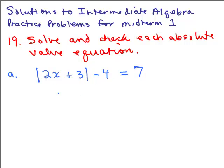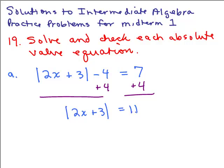We have to isolate the absolute value — that's one way to make the problem easier. So I'm going to add 4 to both sides. We get the absolute value of 2x plus 3 equals 11. That means whatever's inside this absolute value can either be 11 or negative 11. So we write: 2x plus 3 equals 11, or 2x plus 3 equals negative 11.